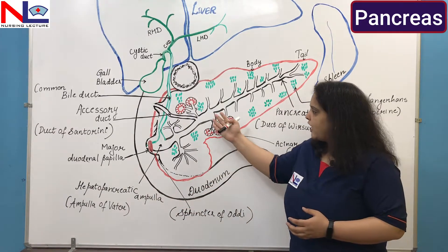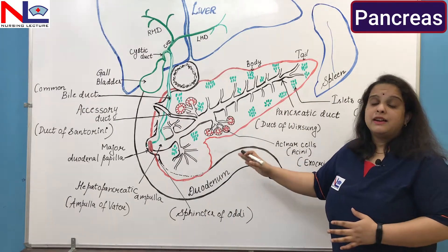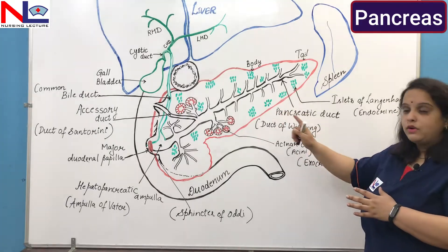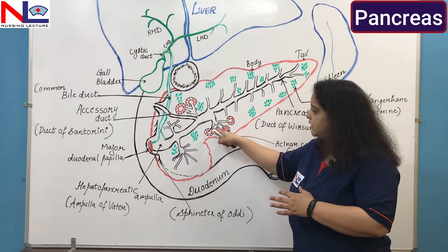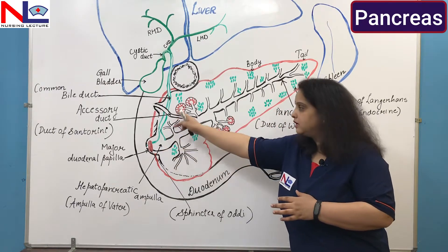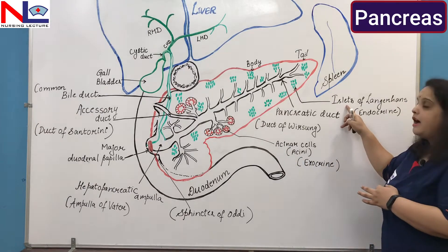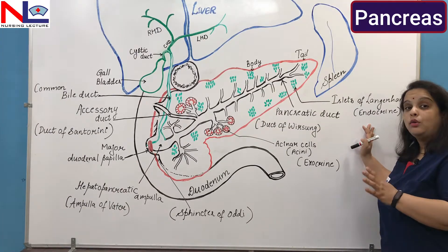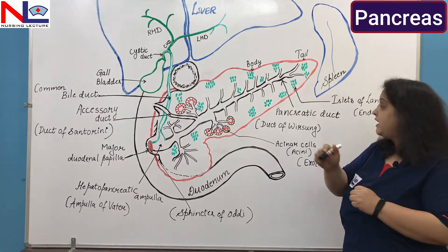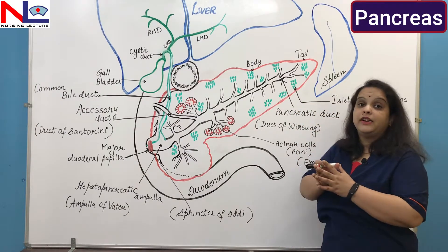All the proteolytic enzymes released from the acinar cells are in inactive form and are activated by trypsin. So in the pancreas, 99% of the cells are acinar cells that act as exocrine glands, releasing enzymes through the duct system into the main duct and onto the surface of the duodenum. The remaining 1% of cells within the pancreas are called islets of Langerhans (or pancreatic islets), which play the role of endocrine glands, releasing hormones directly into the bloodstream via surrounding blood vessels.